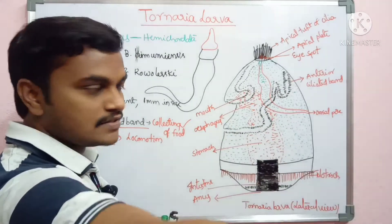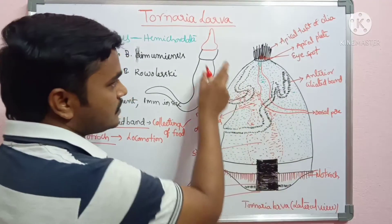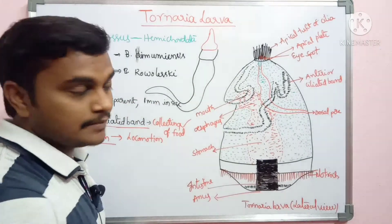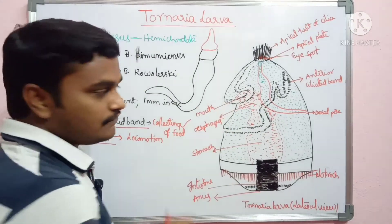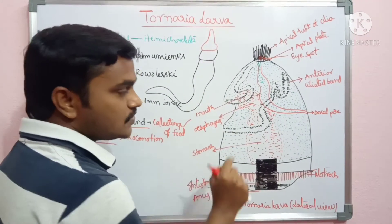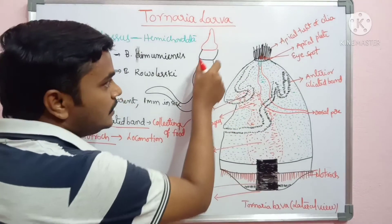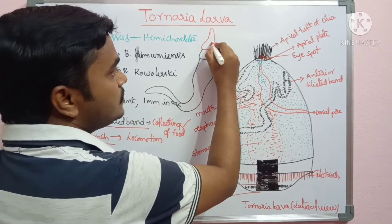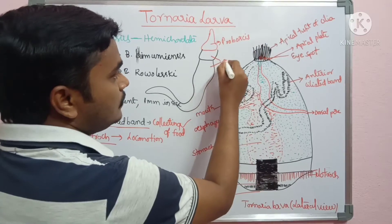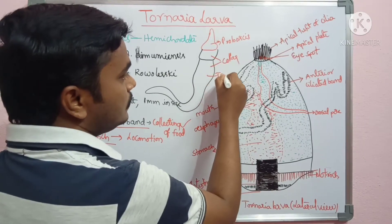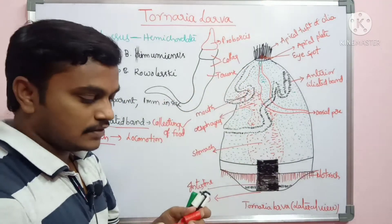Once the anterior ciliated band is lost, the telotroch remains as it is. The form is converted into a worm-like structure. Two constrictions form during metamorphosis: the first constriction forms the proboscis, and the second constriction forms the collar and trunk region. So two constrictions will form the proboscis, collar, and trunk.